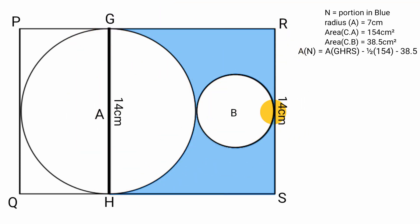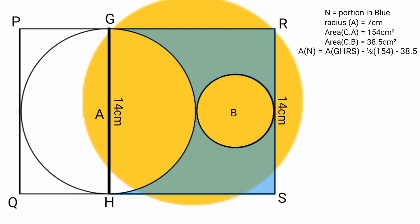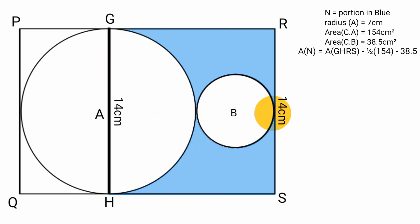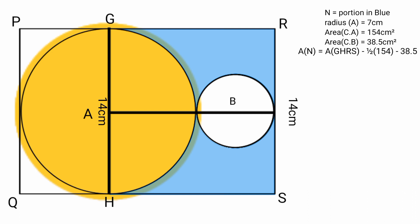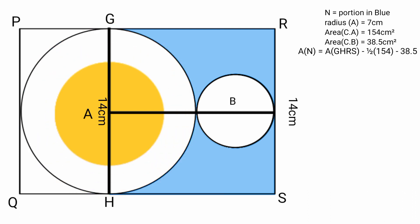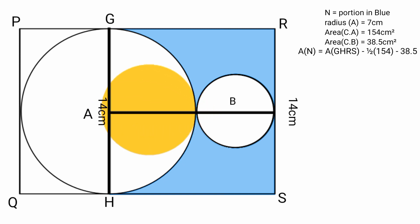Recall that circle B touches line RS at its midpoint. Drawing a line parallel to HS from that midpoint to line GH shows this must also be the midpoint of GH, since GH and RS are parallel and equal. The midpoint of the diameter of a circle is its center, so this point is also the center of circle A. The distance from the center to H equals the radius of circle A, which is 7 centimeters.